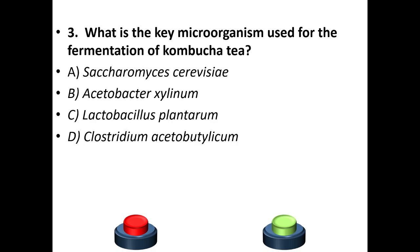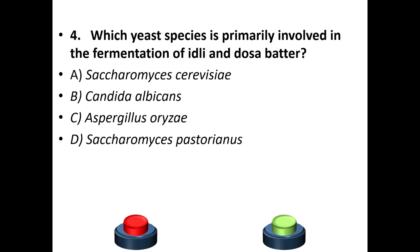Third question: what is the key microorganism used for the fermentation of kombucha tea? A: Saccharomyces cerevisiae. B: Acetobacter xylinum. C: Lactobacillus plantarum. D: Clostridium acetobutylicum. Your answer is B — Acetobacter xylinum.